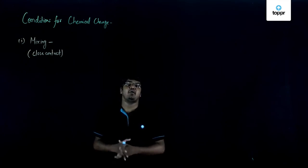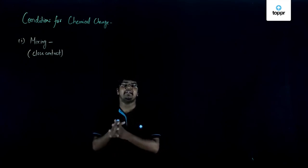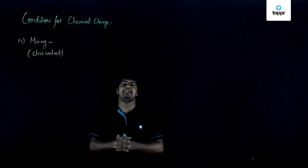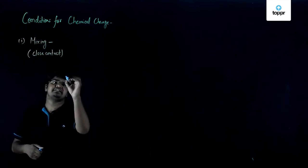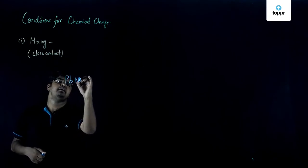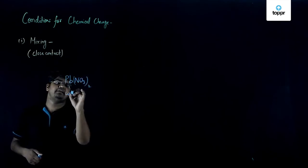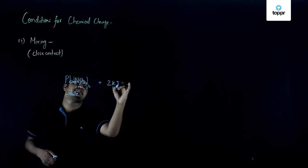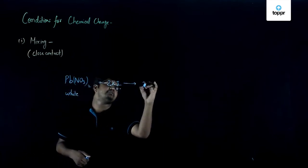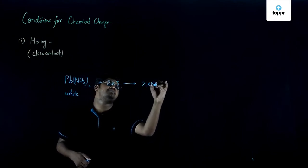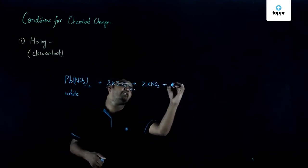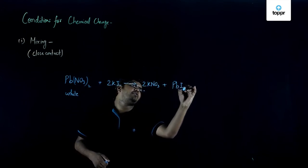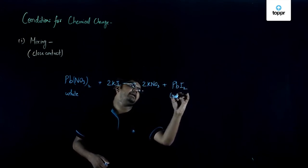Also, white colored lead nitrate upon reaction with potassium iodide gives us yellowish lead iodide. The chemical reaction can be written as Pb(NO3)2, that is white colored lead nitrate, upon reaction with potassium iodide will give us potassium nitrate and the other will be yellowish lead iodide.